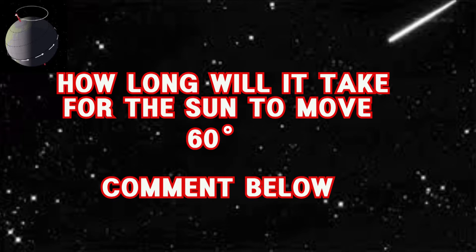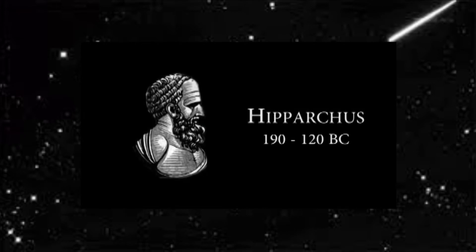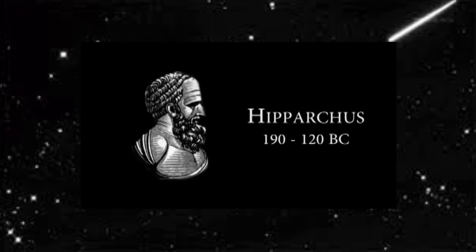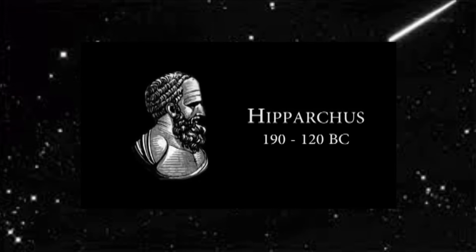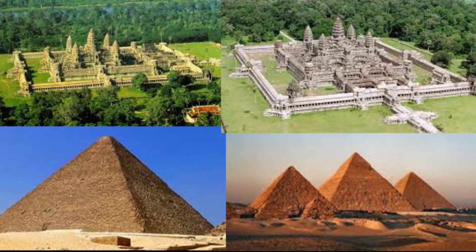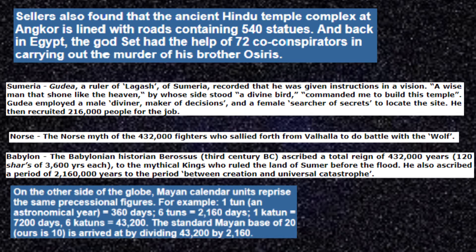Here's a little history on the discovery of precession. Historically, the discovery of precession of the equinoxes is usually attributed in the West to the astronomer Hipparchus. However, if you look at ancient monuments around the world, like the pyramids of Egypt or the temples of Angkor Wat, the numbers are encoded into these structures. Or if you read ancient texts and myths, the numbers of precession always appear. That begs the question: when were they really discovered, and by who?